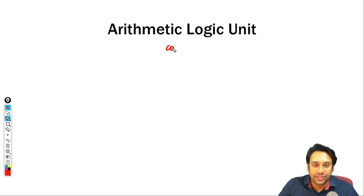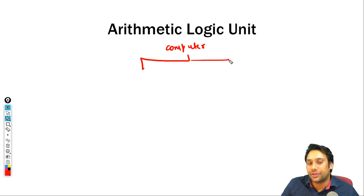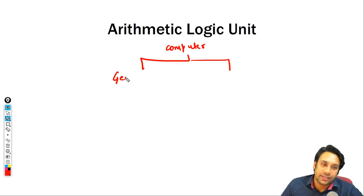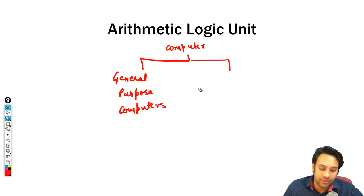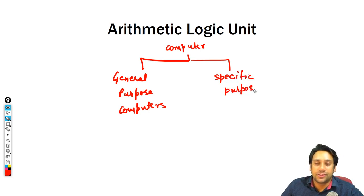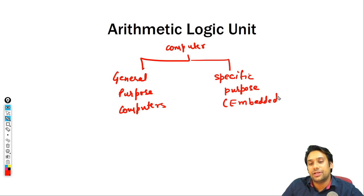Generally when we talk about computers, we have two kinds of computers. The first category is called general purpose computers. The second category is specific purpose computers. These specific purpose computers we also call embedded systems.